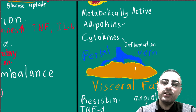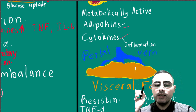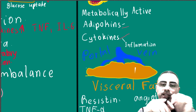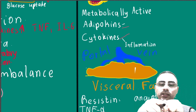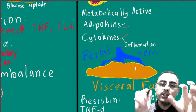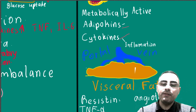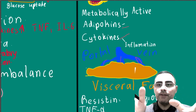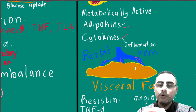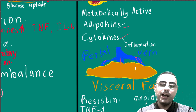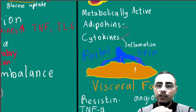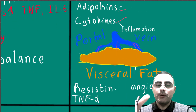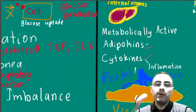These hormones, cytokines, and interleukins — including resistin, adiponectin, and leptin — produced by visceral fat go directly to the portal vein, so they can directly affect internal organs. They can directly affect the pancreas, the liver, and other internal organs. That's why visceral fat is so important.